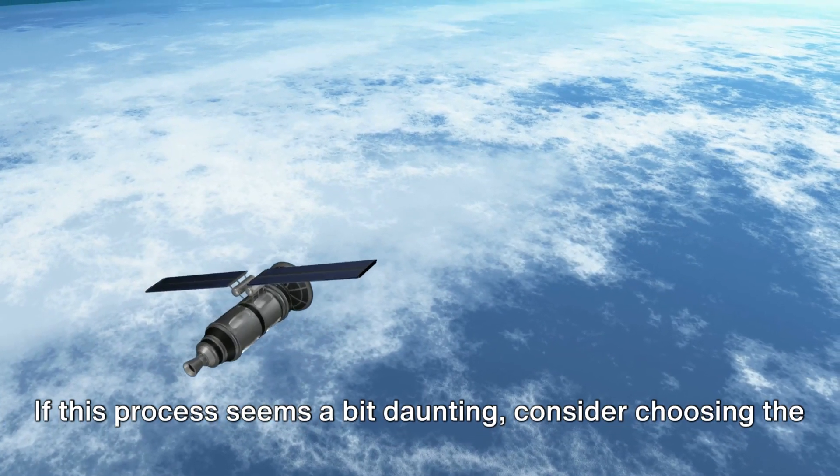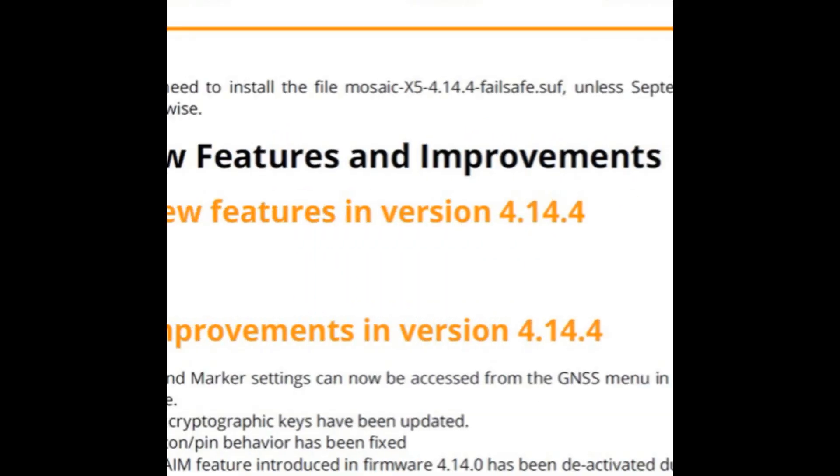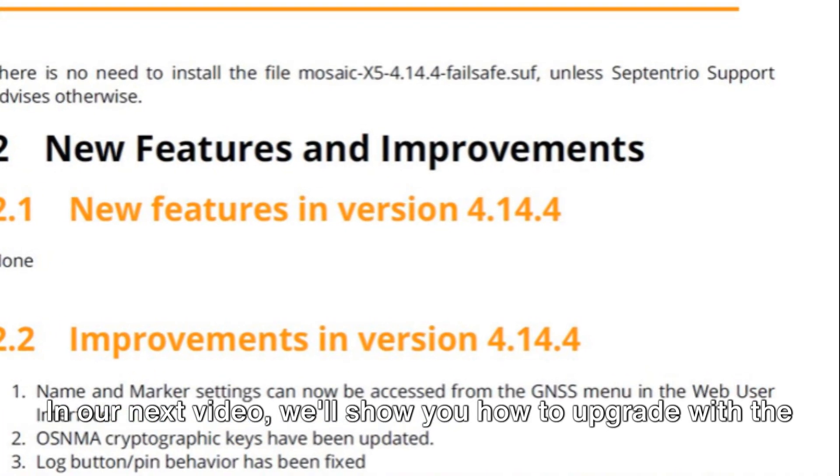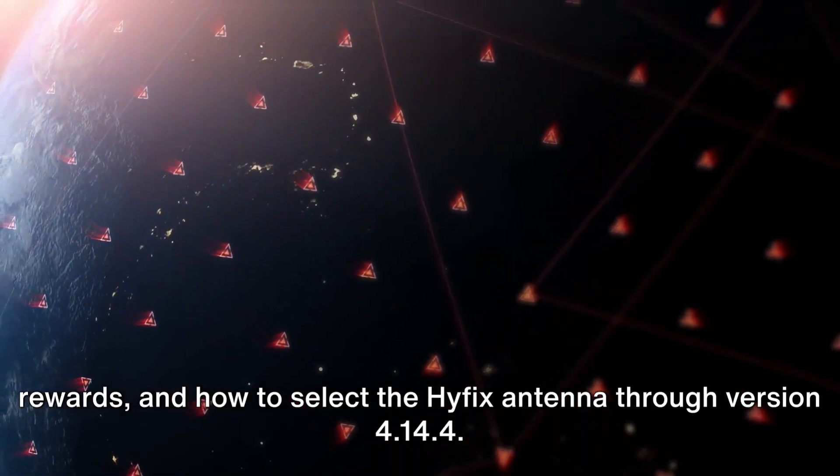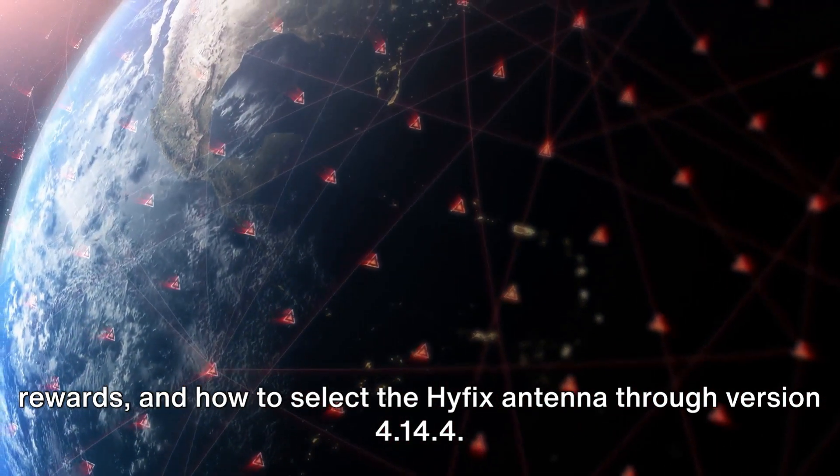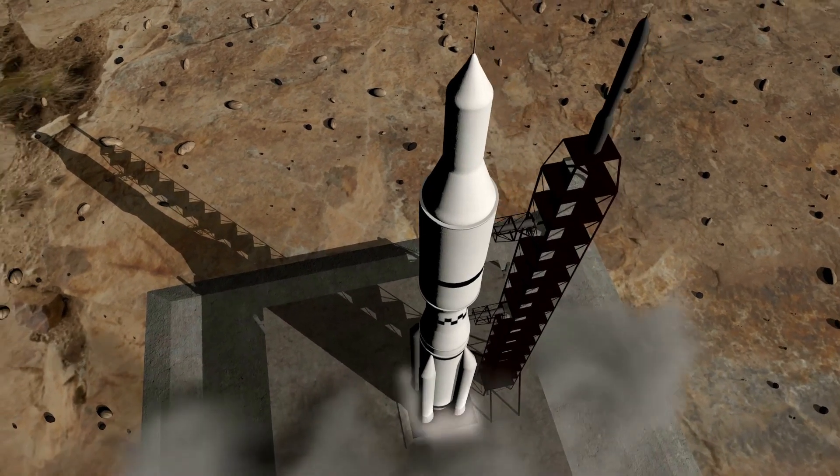If this process seems a bit daunting, consider choosing the Plug and Play Entrip X, link in description. In our next video, we'll show you how to upgrade with the Septentrio program to improve reception and therefore rewards, and how to select the HiFix antenna through version 4.14.4. Until then, happy mining!